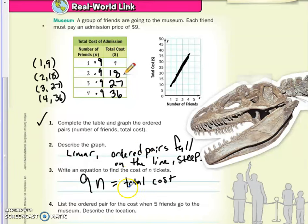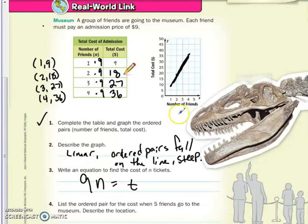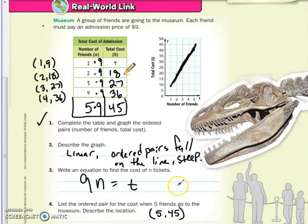Later today, we're going to be using the variable T for total cost, so I'll just put that there now. And the ordered pair for when five friends go to the museum, well, let's put a fifth row here, and let's see what we should do. Well, if we multiplied every one of our Ns by 9, then we're going to multiply the fifth N by 9. Again, 5 times 9 is 45. So your ordered pair is for five friends, it costs $45. If you were to graph it, it should fall right on the line. And if we were to extend this line, you could see that it goes right to that point.